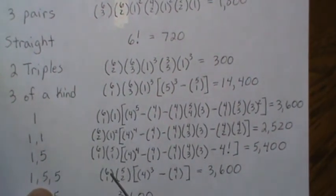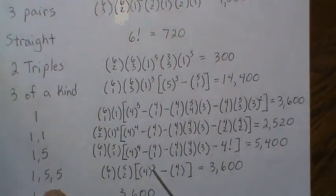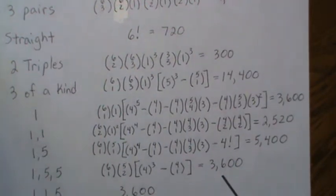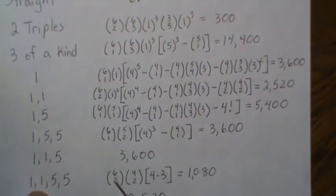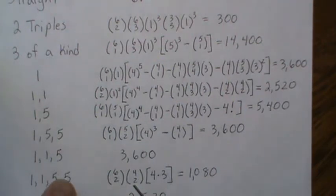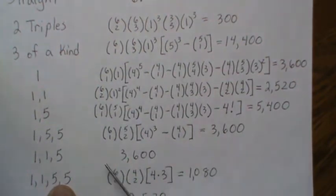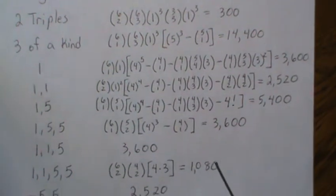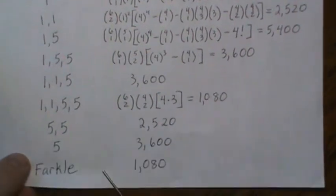For one-five-five: of the six dice pick one for the one; of the five remaining pick two for the fives; 4^3 possibilities for the remaining three dice, but subtract out the straight possibility — giving 3,600. One-one-five is the same as five-five-one, so we borrow that. For one-one-five-five: of the six dice pick two for the ones; of the four remaining pick two for the fives; the fifth die has four possibilities, and the sixth die can't match any chosen number (else we'd be in three pairs), so only three possibilities — giving 1,080. Five-five is the same as one-one. A five alone is the same as a one alone. And then Farkle gives 1,080.